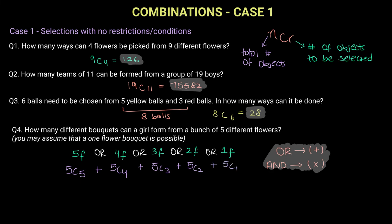Using a combination notation in our calculator we get 1 + 5 + 10 + 10 + 5 which gives you 31 ways of forming different bouquets from five different flowers. And this is our answer.